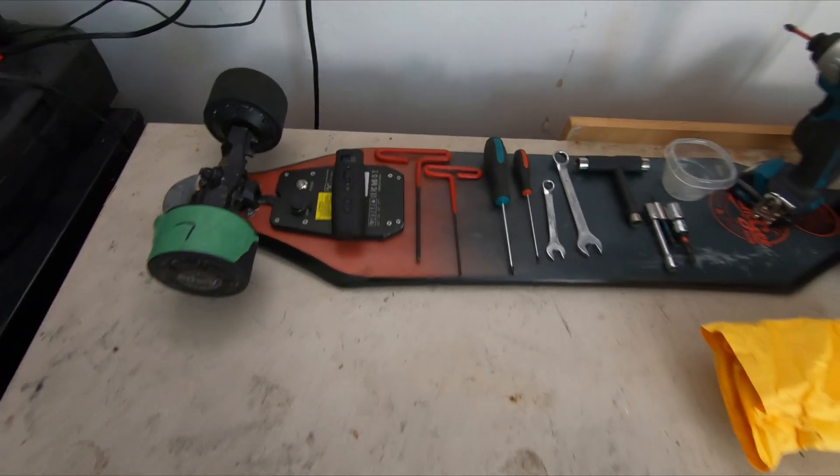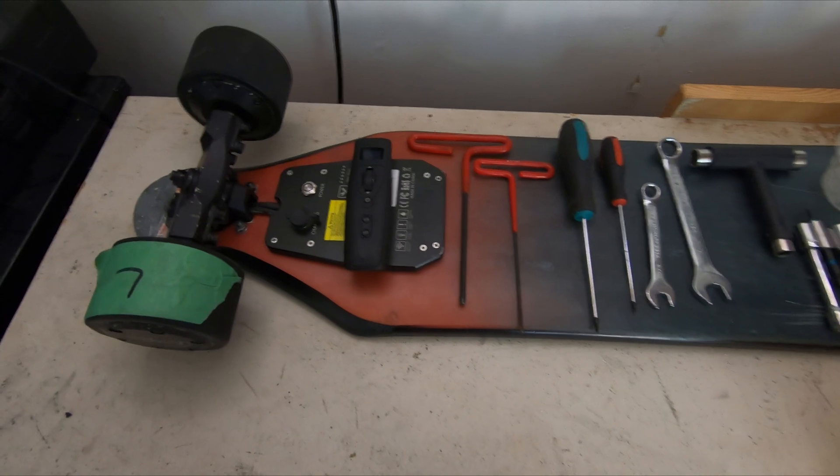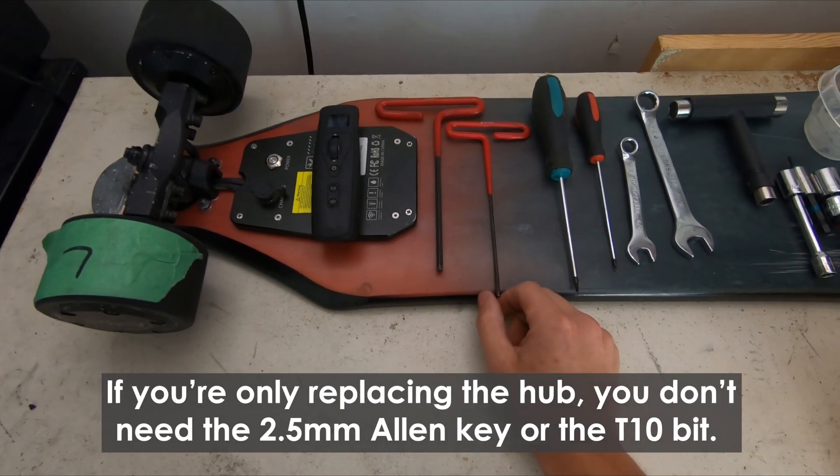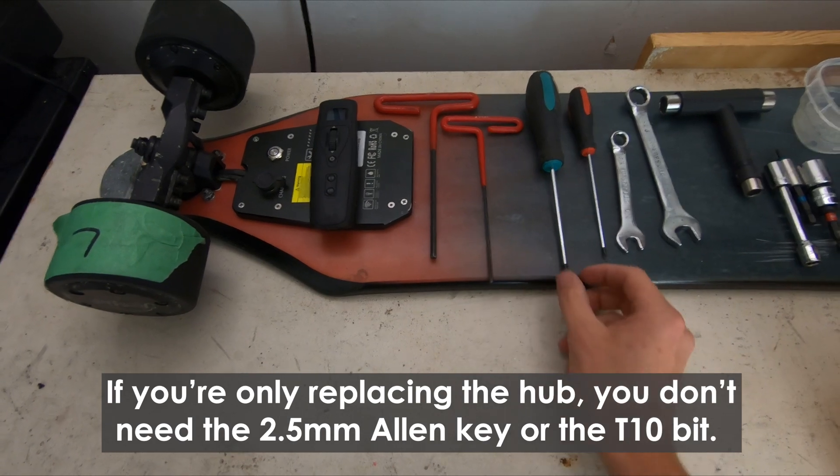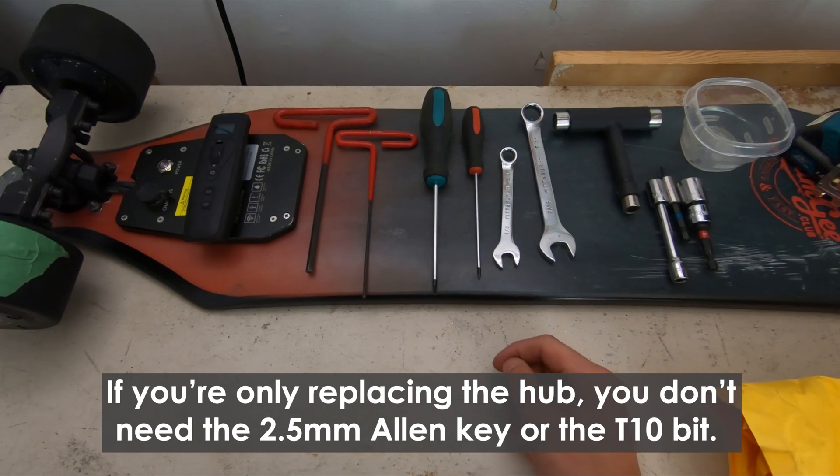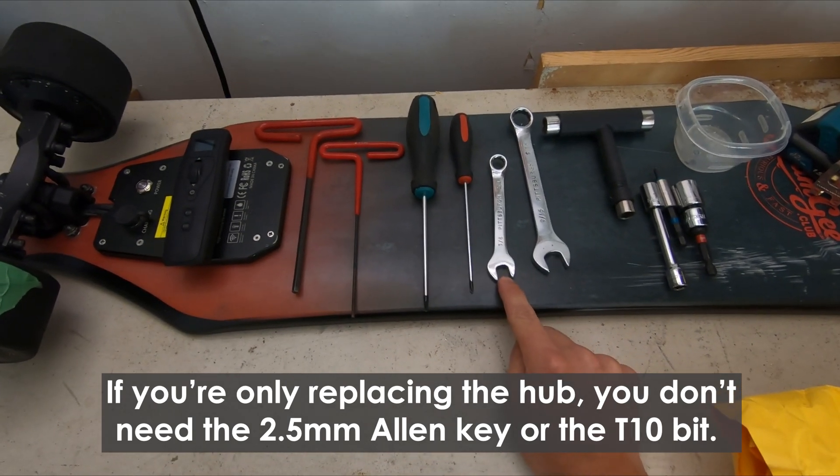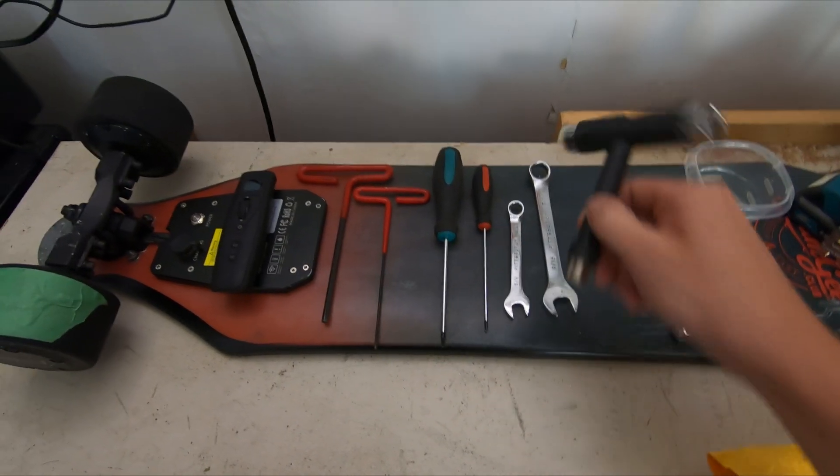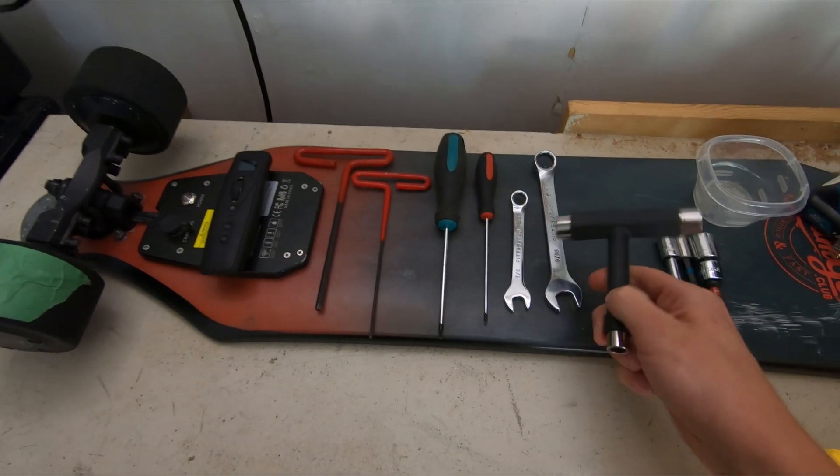A couple of the tools that you'll need to do this: You will need a 5mm Allen key, a 2.5mm Allen key, a T10 Torx bit, just a standard Phillips head screwdriver, a 3/8 wrench, a 9/16 wrench, and a skate tool really helps out that takes place of these two here.